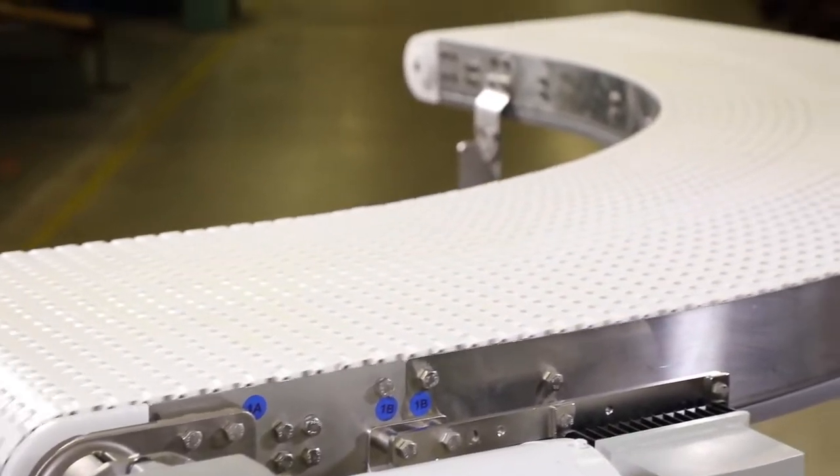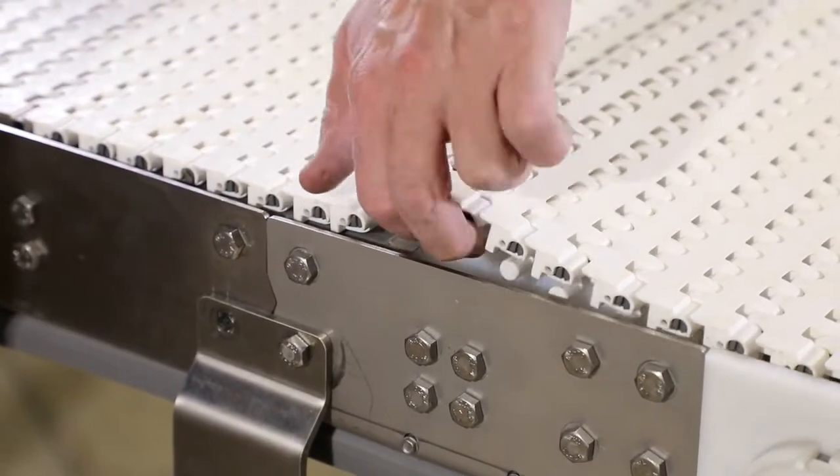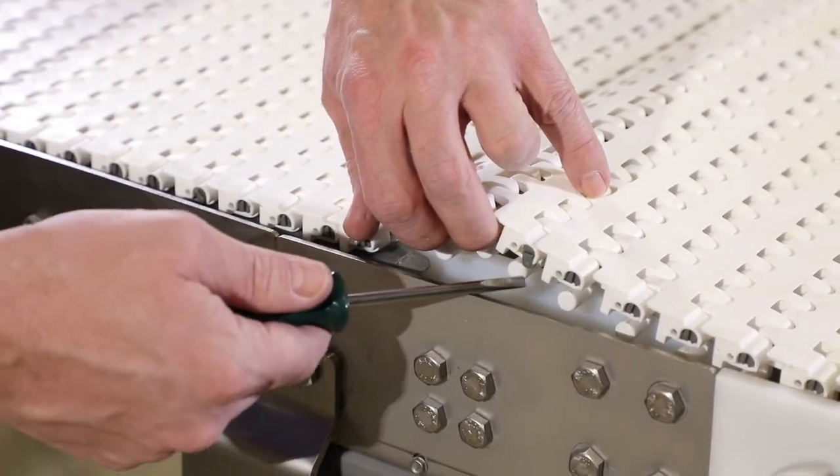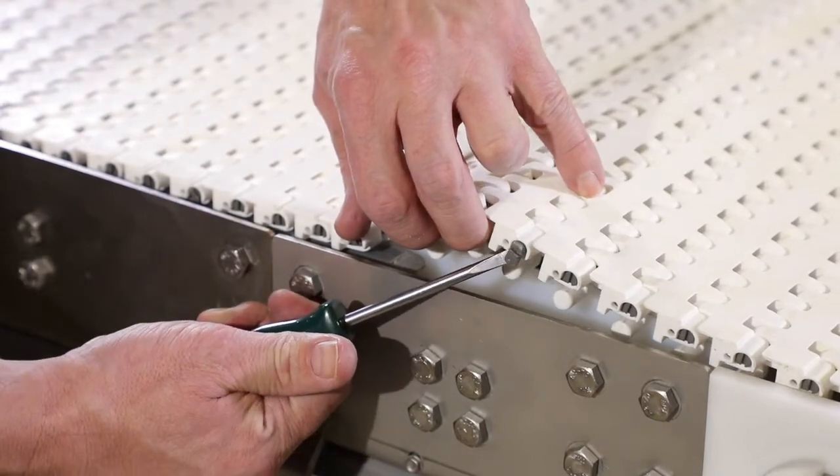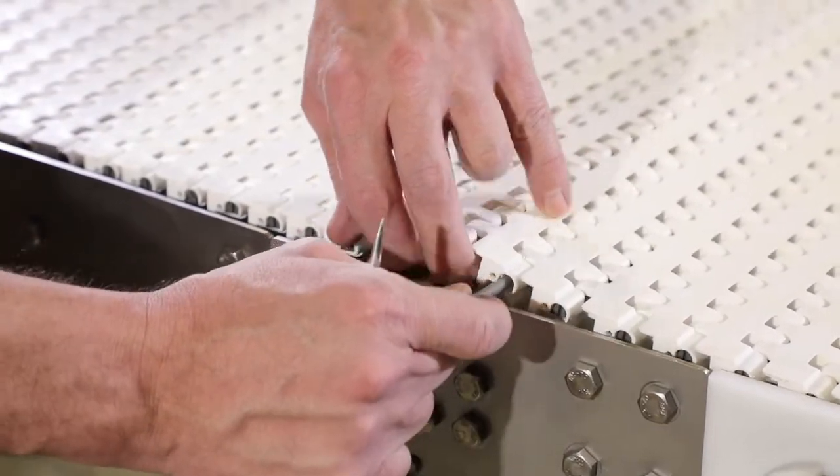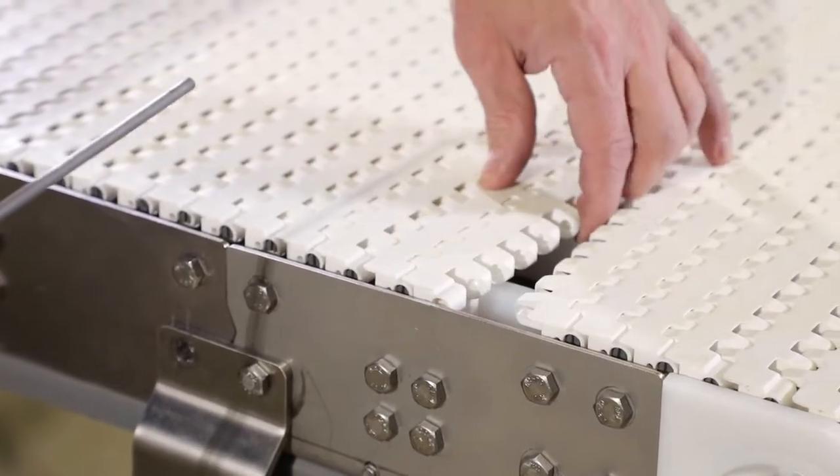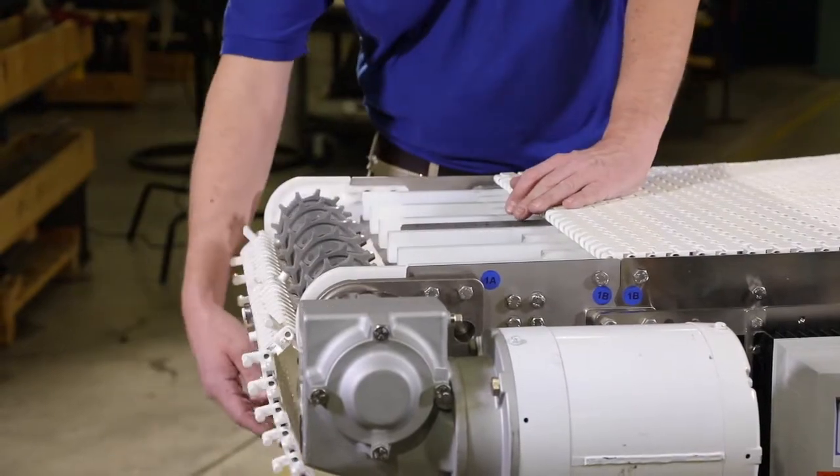To remove the existing belt, lift the belt near the tail end of the conveyor and locate the slotted end. Insert a flathead screwdriver into the slot on the rod head and rotate the rod head counterclockwise to unlock. Then remove the belt rod. Slide the old belt off of the conveyor frame.